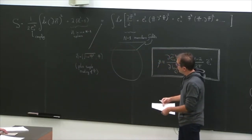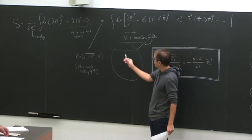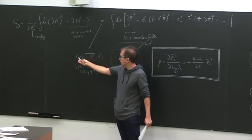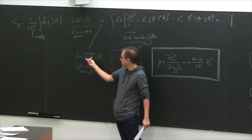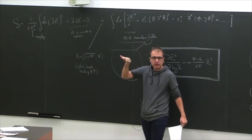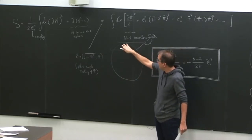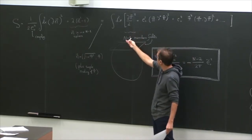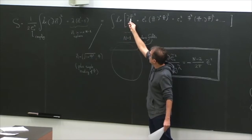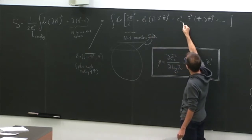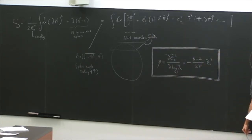We want to study this quantum field theory. If you zoom in close to the North Pole — because if this vector pi is small — then n is approximately equal to 1 plus quadratic, and then linear in the other directions. So we get n minus 1 massless fields. The coupling appears on the vertices; the higher the vertex, the higher the power of the coupling, giving an infinite set of interactions.